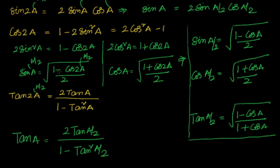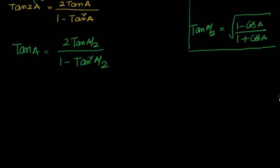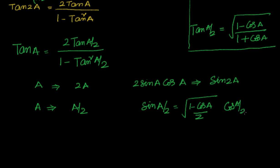So the two important formulas are: sin(a/2) = √((1 − cos a)/2) and cos(a/2) = √((1 + cos a)/2). Given a, you can find a/2 because sin(a/2) = √((1 − cos a)/2) and cos(a/2) = √((1 + cos a)/2).